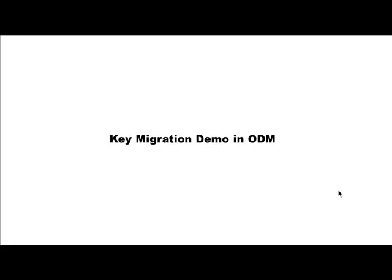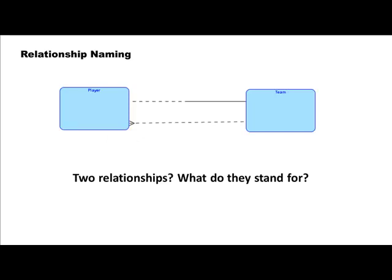Having seen how key migration works in data modeling as well as how it is achieved in Oracle Data Modeler, let's move on to naming relationships. Till now we have assumed that we understand the meaning of every relationship because we took common-sense examples. That may not always be the case, especially when creating a data model for an unfamiliar situation — just drawing lines between entity types may not make complete sense.